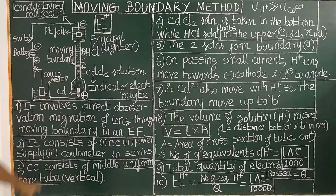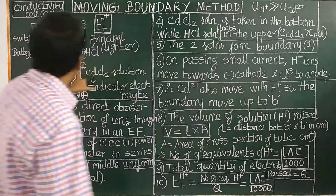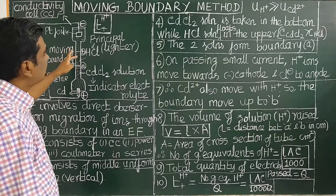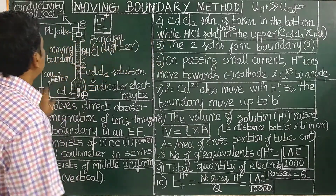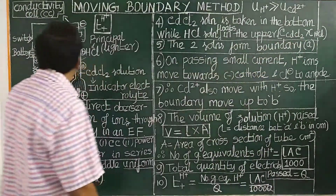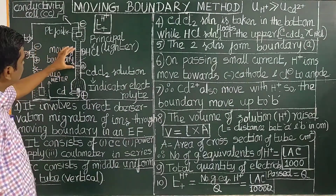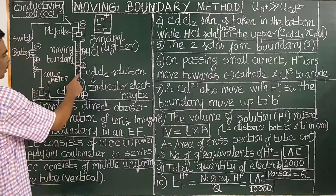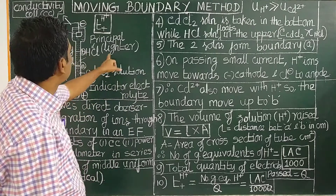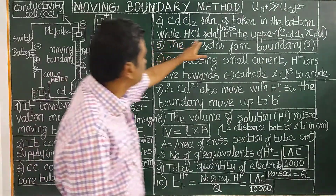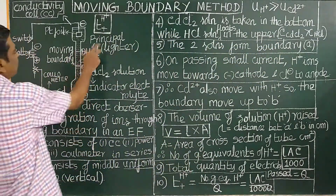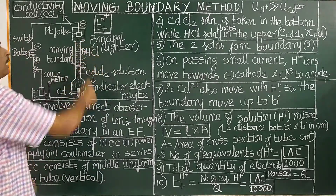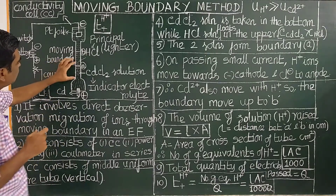Cadmium chloride is taken in the bottom portion — the lower portion is cadmium chloride. HCl is taken in the upper portion. The concentrations of cadmium chloride and HCl are adjusted so that the HCl solution, being lighter, floats on the cadmium chloride solution. A sharp boundary is visible between the two solutions.